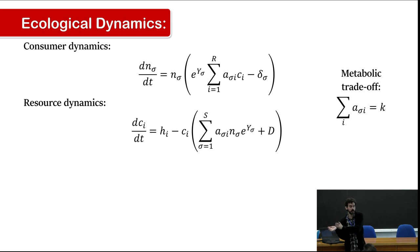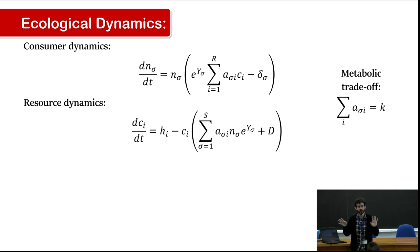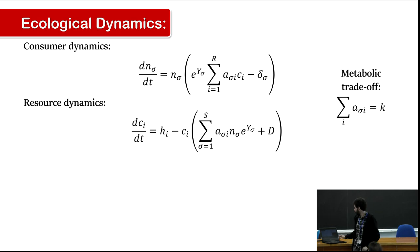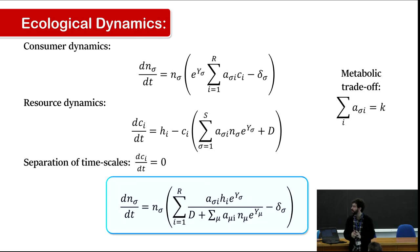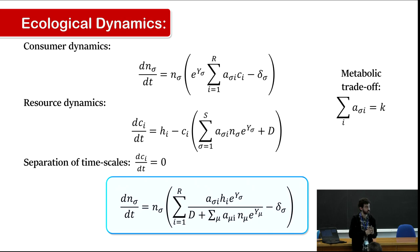To treat these equations, we change time scales: we say the consumer dynamics is very fast, so we set the resource equation to zero and include that result in the previous equation. We then have a final equation we're going to work with.